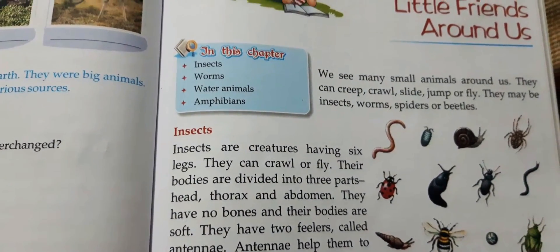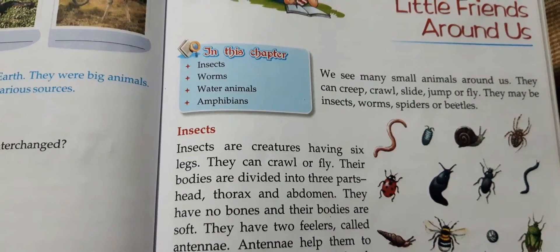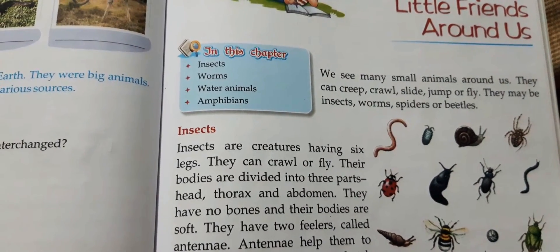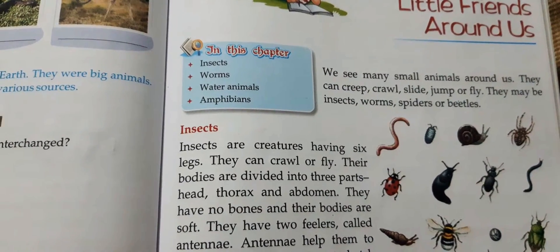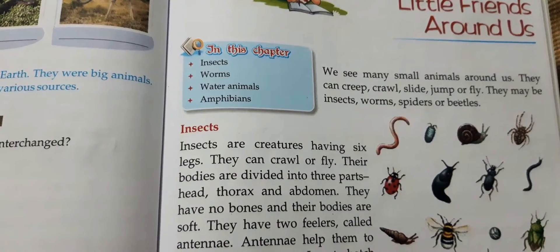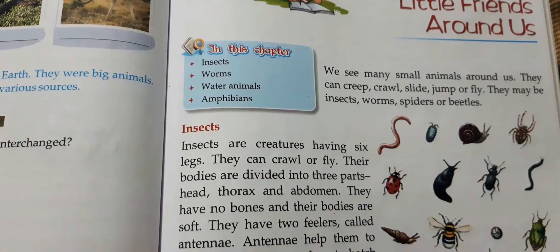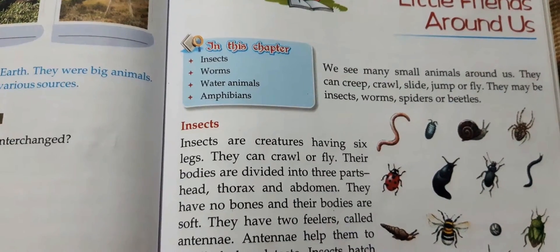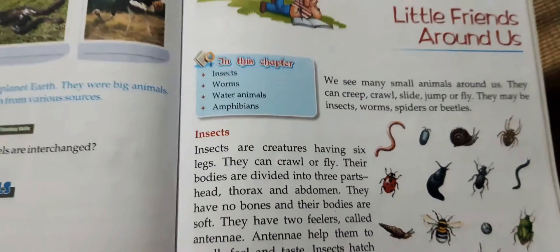We see many small animals around us. They can creep, crawl, slide, jump or fly. They may be insects, worms, spiders or beetles.